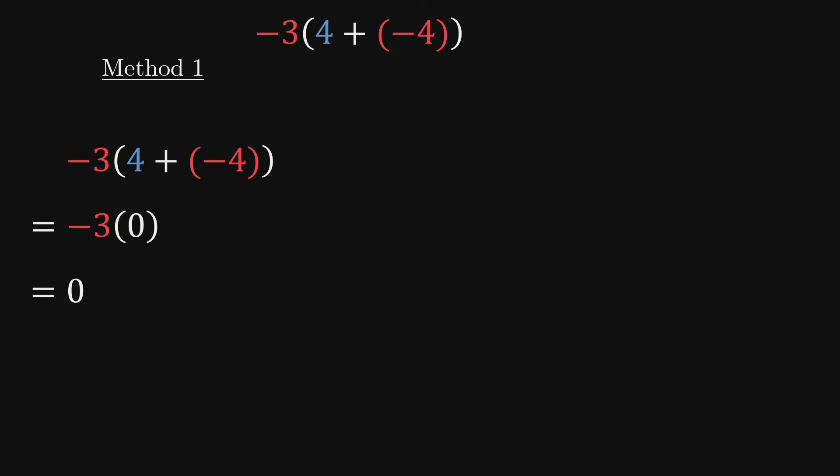Now let's use the distributive property to evaluate the same expression in a different way. To do so, we multiply negative 3 by each term in the brackets and add the results. So, negative 3 times 4 plus negative 4 is the same as negative 3 times 4 plus negative 3 times negative 4.